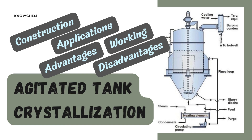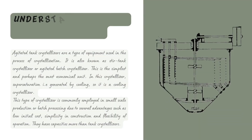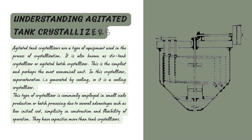An agitated tank crystallizer is also known as a stirred tank crystallizer or agitated batch crystallizer. This type is the simplest and perhaps the most economical of all crystallizers. Supersaturation is achieved by cooling, so it is also called a cooling crystallizer.